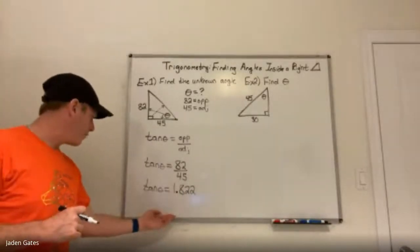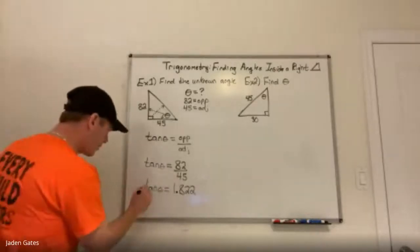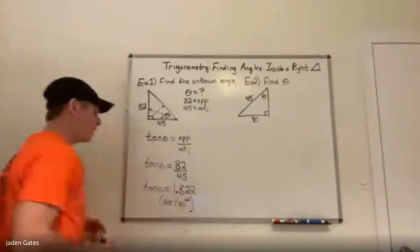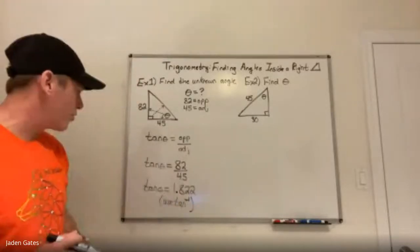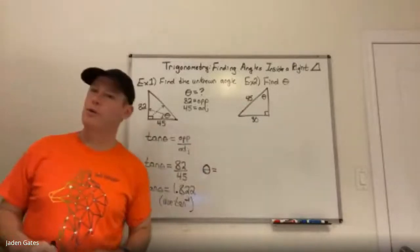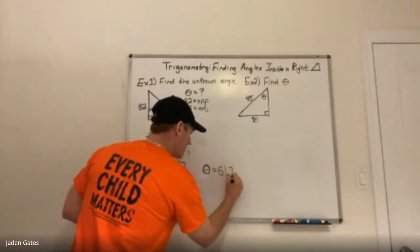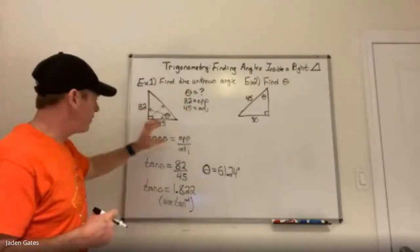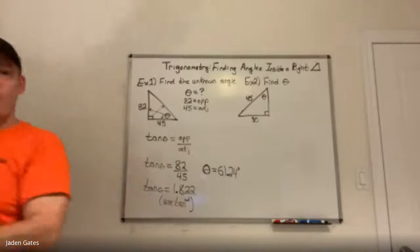We have tan theta equals 1.822, but we want the angle. Since we have tan theta, we use tan inverse — that's tan to the negative one. Hit the second function button on your calculator, then tan, type in 1.822, and make sure your calculator is in degree mode. Doing that gives us 61.24 degrees. Same steps: write out information, figure out which trig ratio to use, substitute in, and solve.